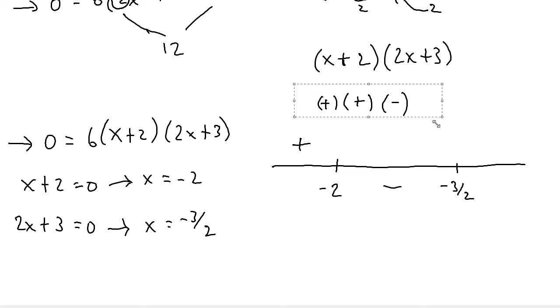And then something greater than negative 3 halves, let's just plug in 1. And if I plug in that, I'll get a positive. I'll get a positive times another positive times another positive, and that's obviously just going to be positive.